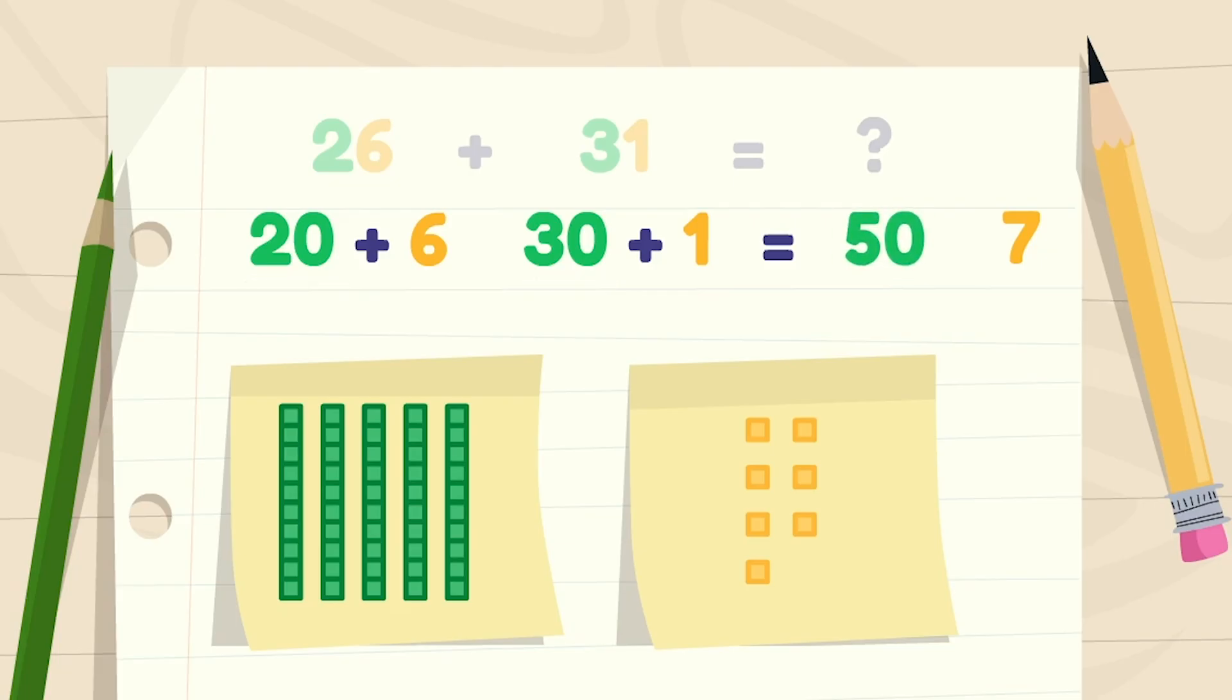The final sum is 50 plus 7, which is 57. 26 plus 31 is 57.